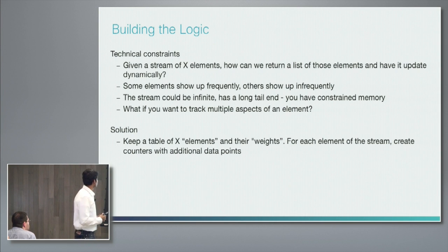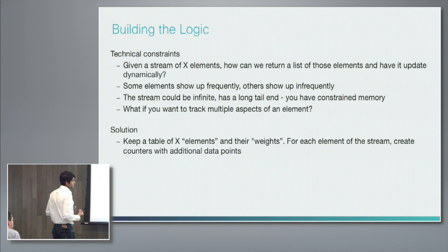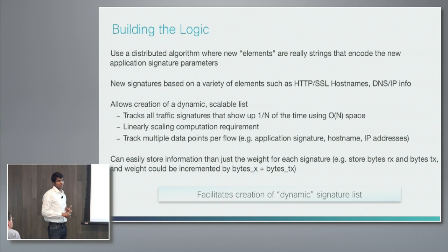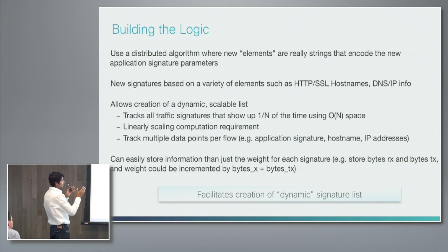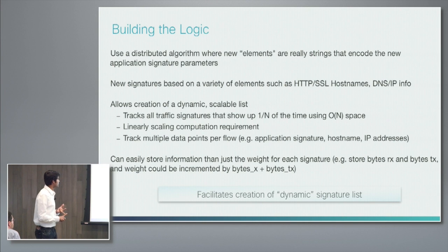The solution is to keep a table of elements and their weights. As you see elements increasing over time — say 10 elements being hit versus one element being hit 10 times — you increment those counters and build a dynamic list over time. What we did was completely redesign the algorithm using a distributed algorithm where elements are strings that encode new application parameters. For example, for some website in Timbuktu, we look at the hostname, strip away some parameters within that hostname, create a new signature on the fly, and encode additional parameters on top — HTTP ports, SSL information, hostname, DNS, and IP information.